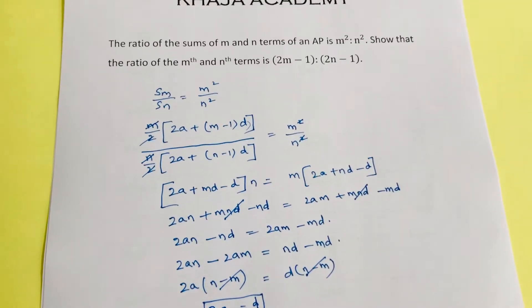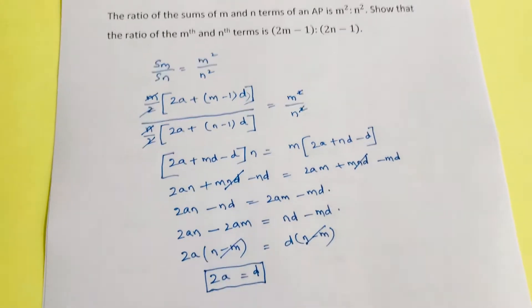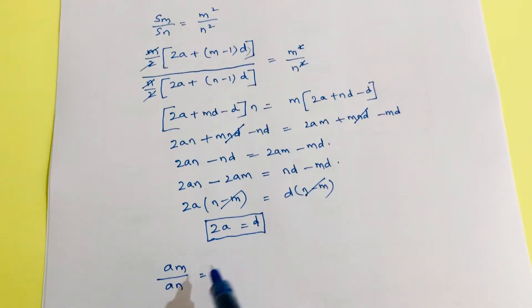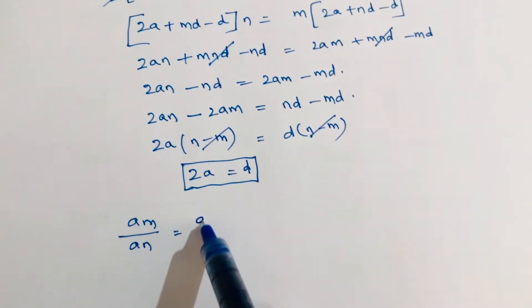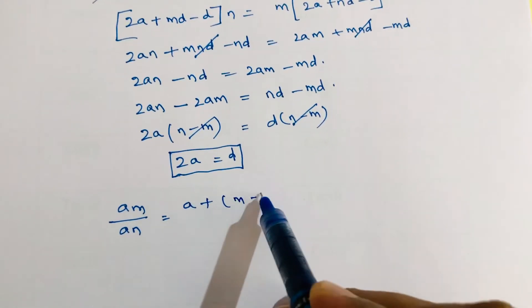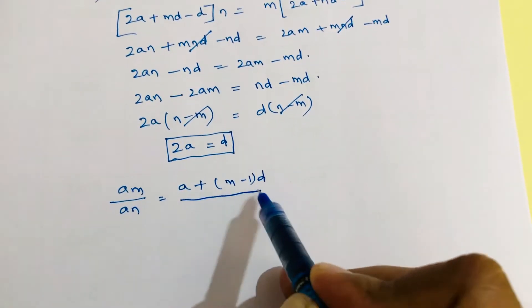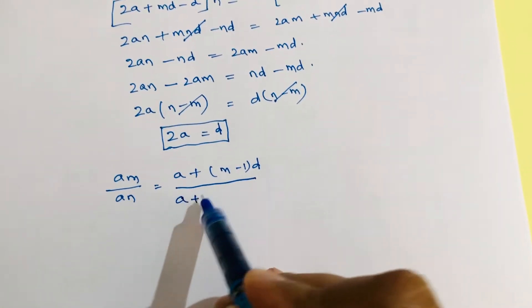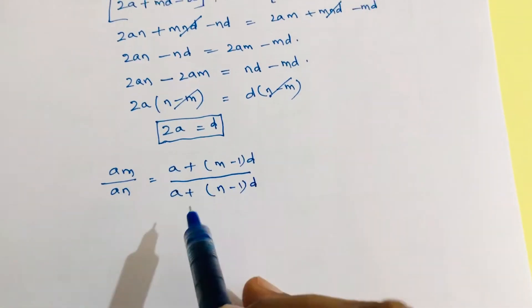Now we need to find the ratio of the m-th and n-th terms. So a_m by a_n. a_m is nothing but a plus m minus 1 into d, divided by a plus n minus 1 into d.